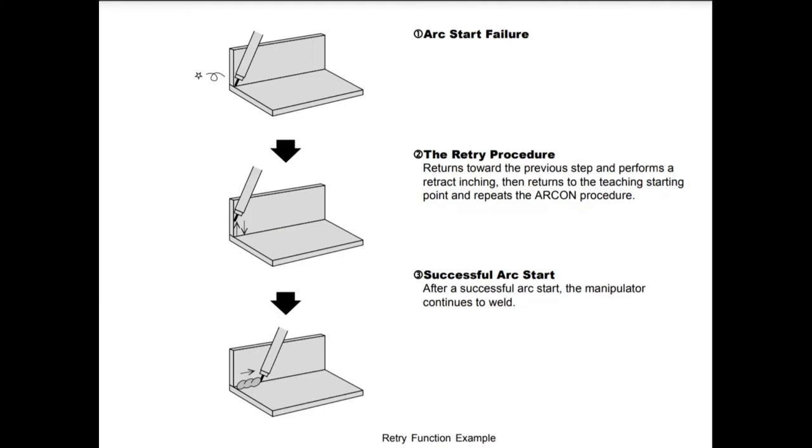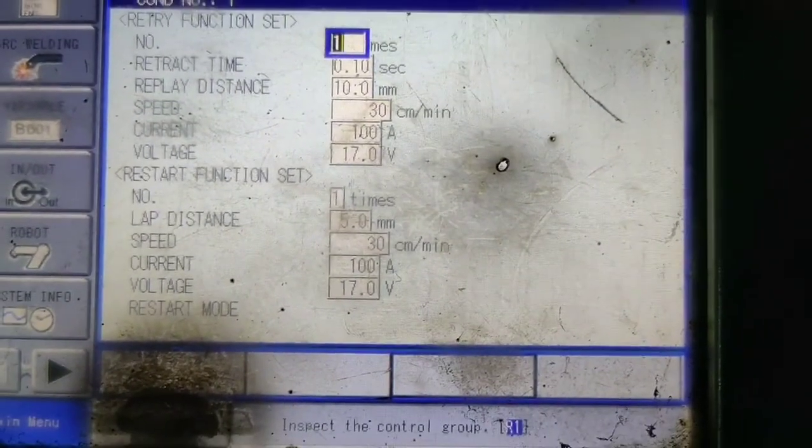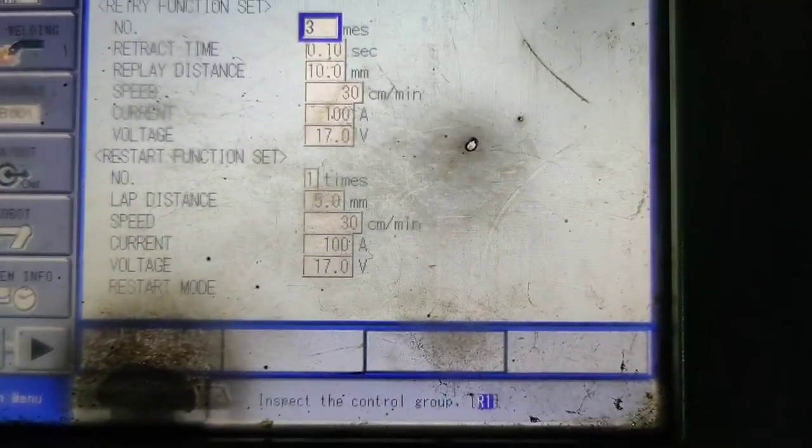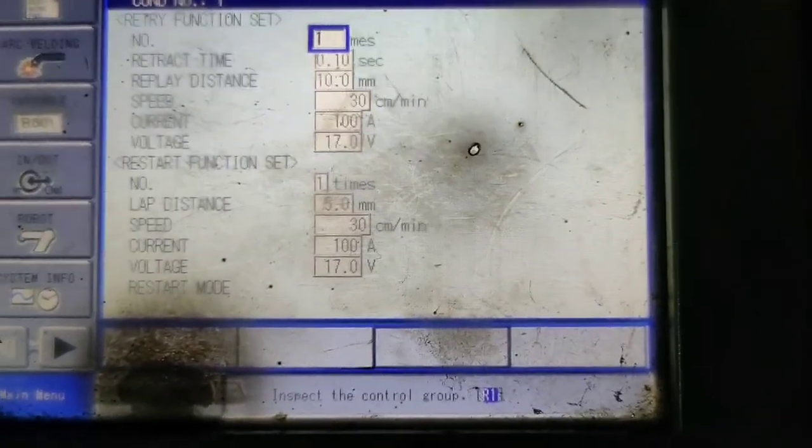After successful robot manipulator will start welding. You understand that by the definition what is retry function. Retry function is used when your robot is going to stop or not performing arc function because of contaminated sources on your base metal.